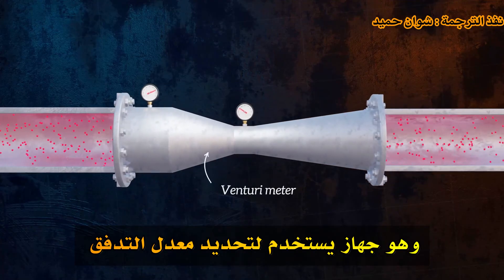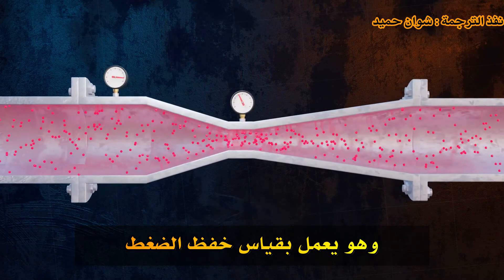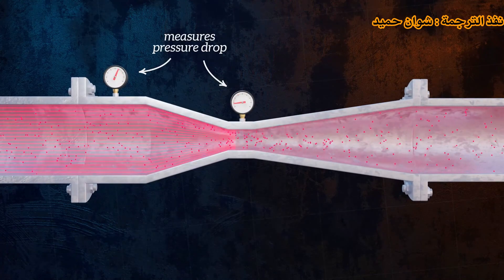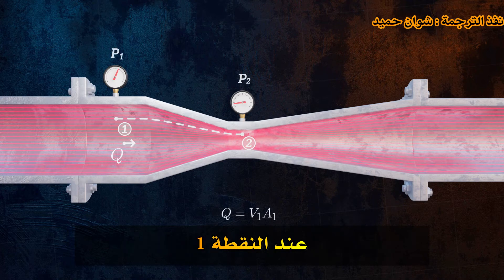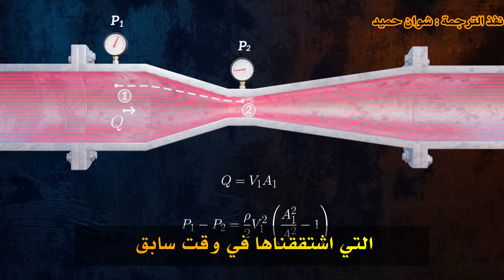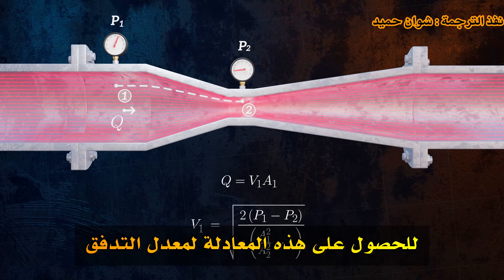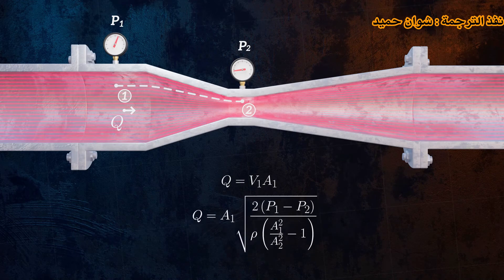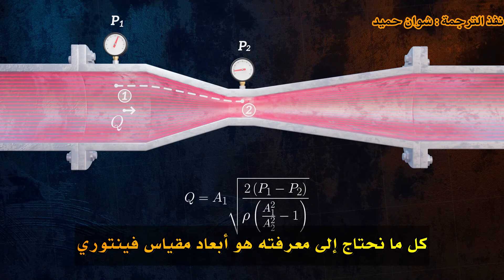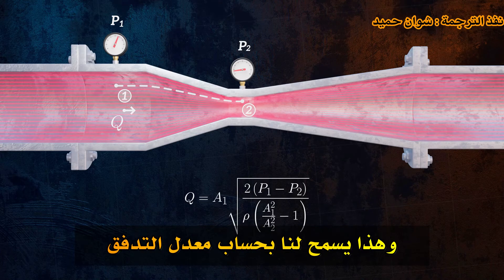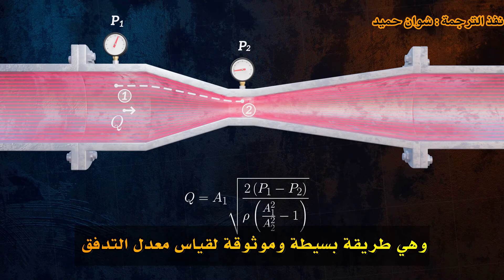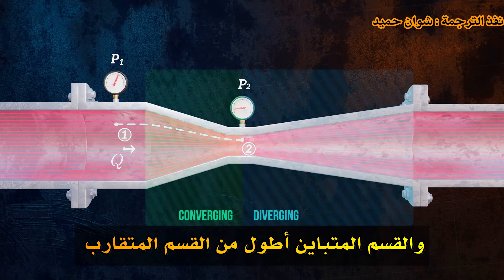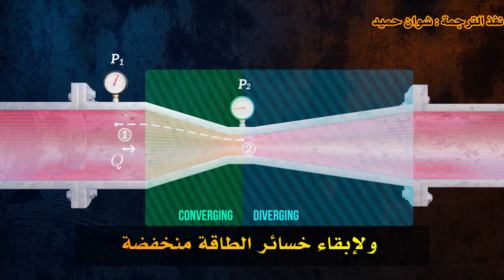Another flow measurement device that uses Bernoulli's equation is the Venturi meter, which is an instrument used to determine the flow rate through a pipe. It works by measuring the pressure drop across a converging section of pipe. Say we want to determine the flow rate Q, which is the velocity multiplied by the pipe cross-sectional area at point 1. We can easily rearrange the pressure drop equation we derived earlier to get this equation for flow rate. All we need to know is the dimensions of the Venturi meter, the fluid density, and the pressures P1 and P2, and that allows us to calculate the flow rate. The Venturi meter has no moving parts and is a very simple and reliable way of measuring the flow rate through a pipe. The diverging section is longer than the converging section to reduce the likelihood of flow separation and keep energy losses low.